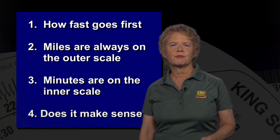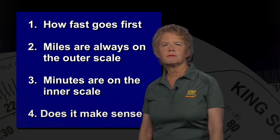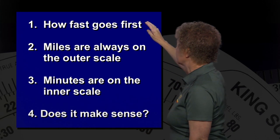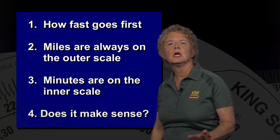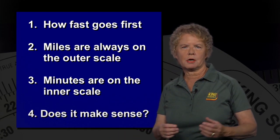So let's recap those four rules because they're important. When you're using the flight computer, how fast always goes first on the circular slide rule side of the flight computer, because it's the most important thing that you have to put on there.